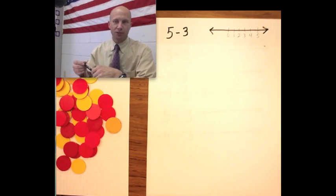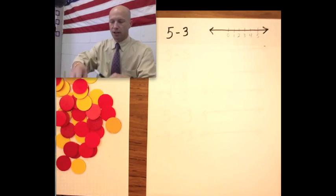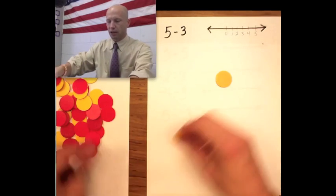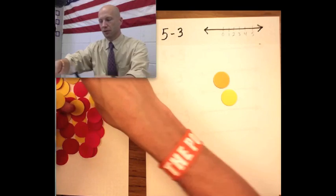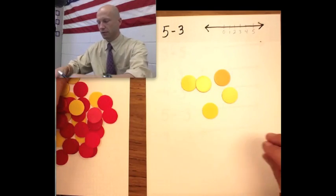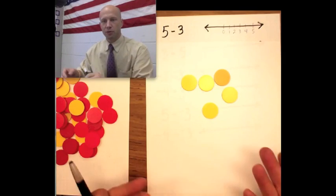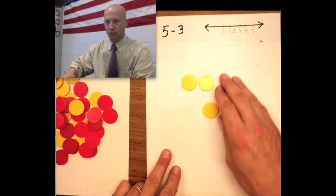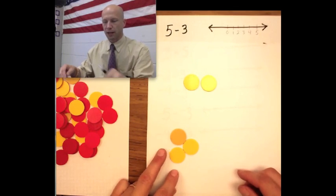Our first problem is 5 minus 3 and that's super easy. We'll show it with our little yellow tiles because these are positive and we have five yellows. That's positive 5, and when we subtract 3 we just take away 3 and that leaves us with positive 2.